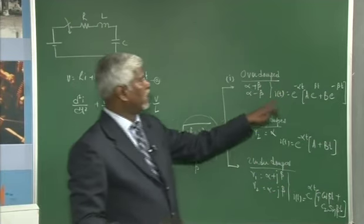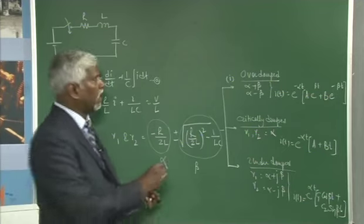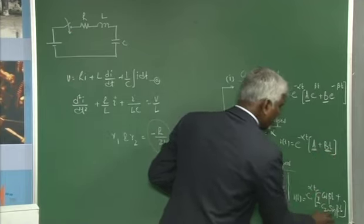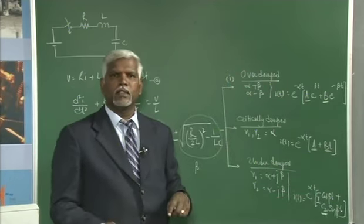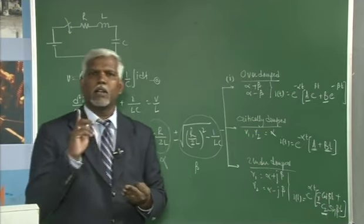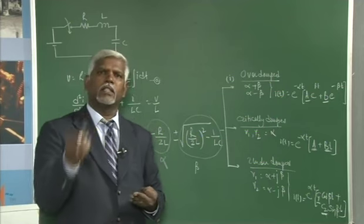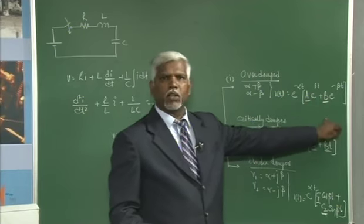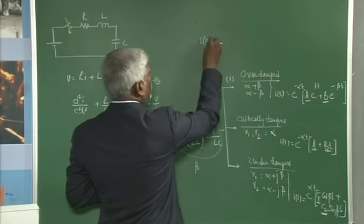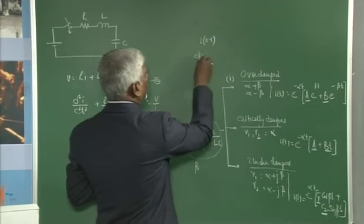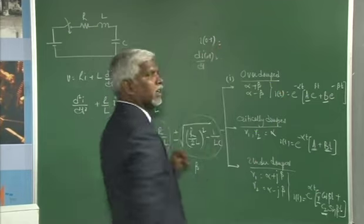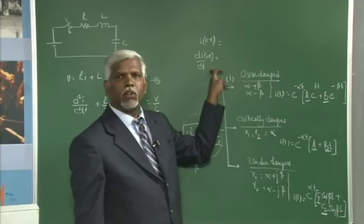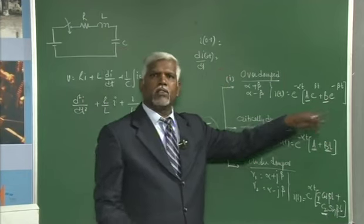To evaluate the arbitrary constants A and B, we need two conditions: the initial value I(0+) and the derivative di/dt at t=0+. In the RL and RC cases we had only one arbitrary constant evaluated using I(0+). For RLC with two arbitrary constants, we need both I(0+) and di/dt at 0+ to get a complete solution.